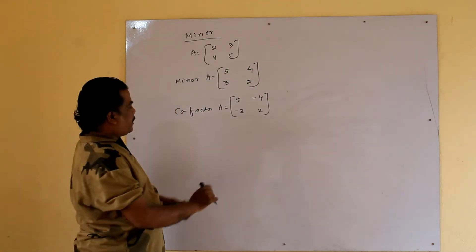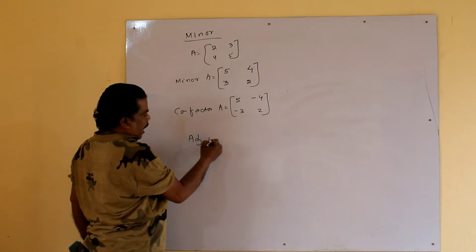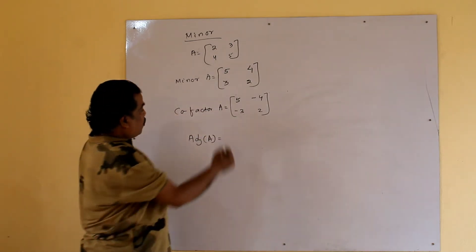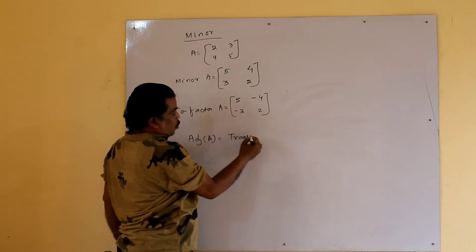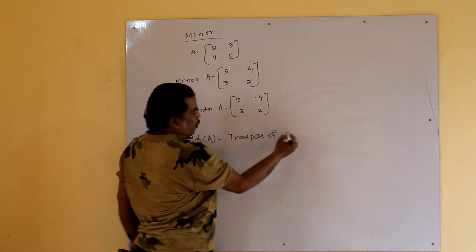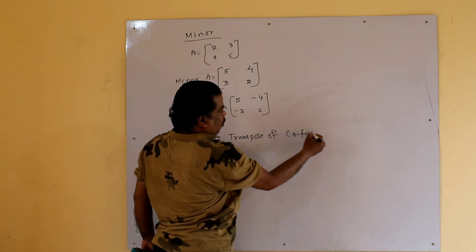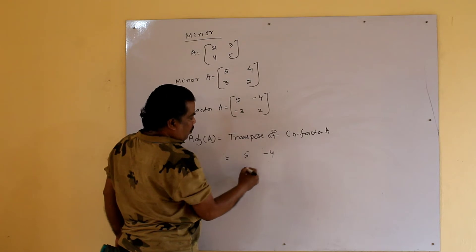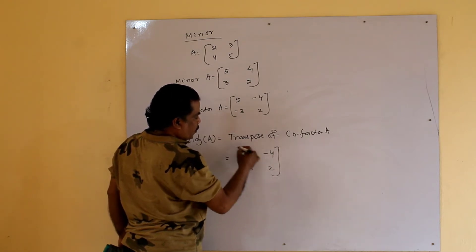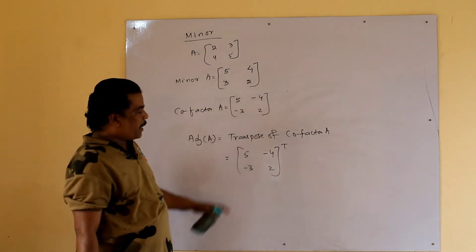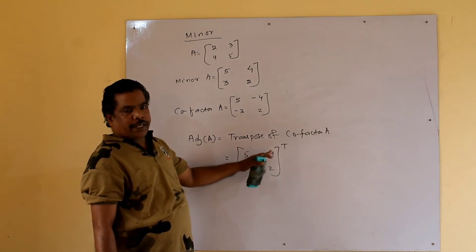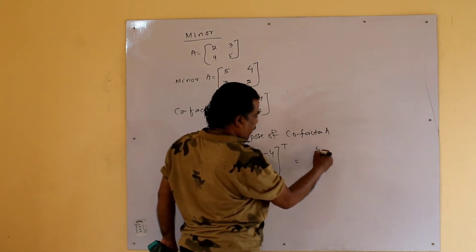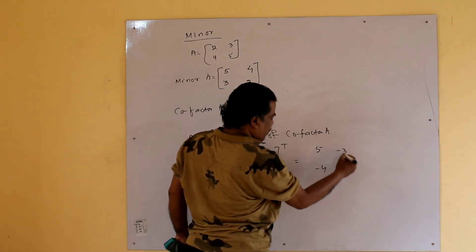Next step: adjoint of the matrix. Adjoint A is obtained by taking the transpose of the co-factor matrix. Co-factor A = [5, -4; -3, 2]. Now taking its transpose — rows are written as columns and columns as rows — so adjoint A = [5, -3; -4, 2].